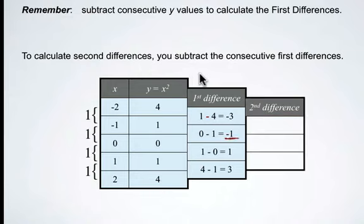So negative 1 minus negative 3. Negative 1 minus negative 3 is positive 2. Then, 1 minus negative 1 is 2. And finally, 3 minus 1 is 2.